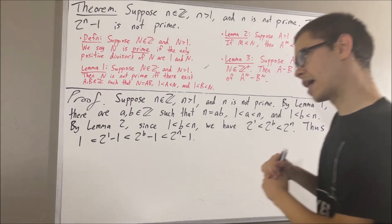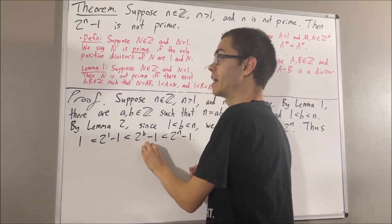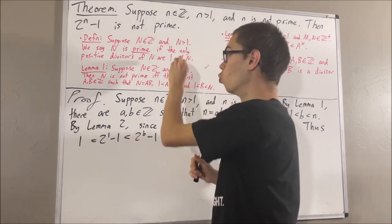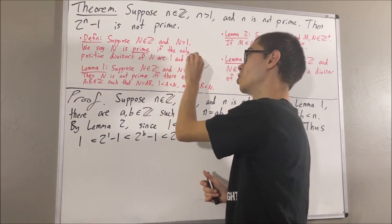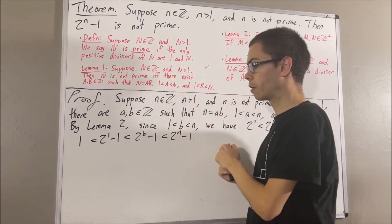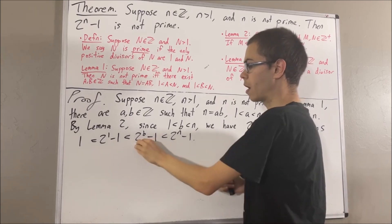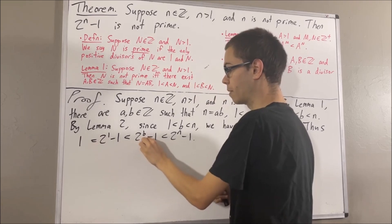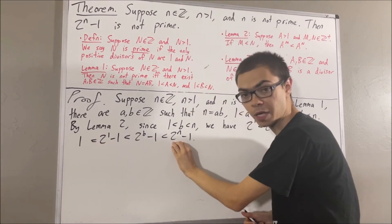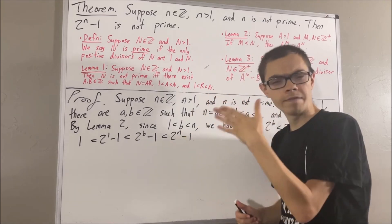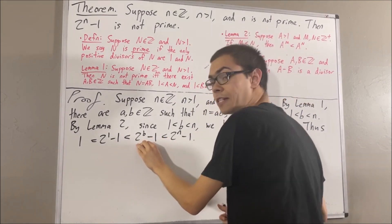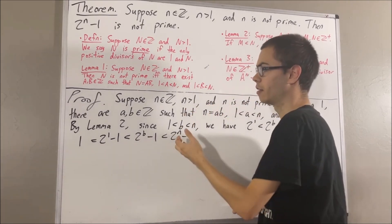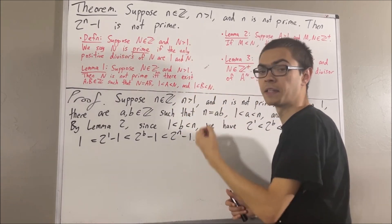Our claim is that 2 to the power of b minus 1 is a positive divisor of 2 to the power of n minus 1, which is not equal to 1 nor 2 to the power of n minus 1. We know that 2 to the power of b minus 1 is positive since it's greater than 1, and we know that 2 to the power of b minus 1 is not equal to 1 or 2 to the power of n minus 1. So all that's left to show is that 2 to the power of b minus 1 is a divisor of 2 to the power of n minus 1. If we can show that, then by definition 2 to the power of n minus 1 is not prime.